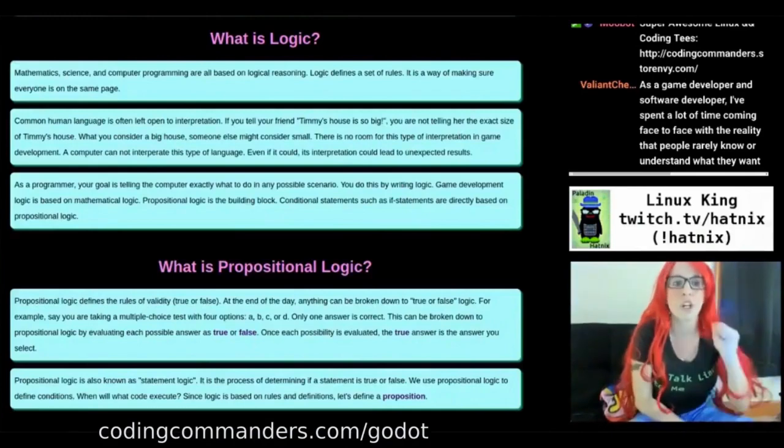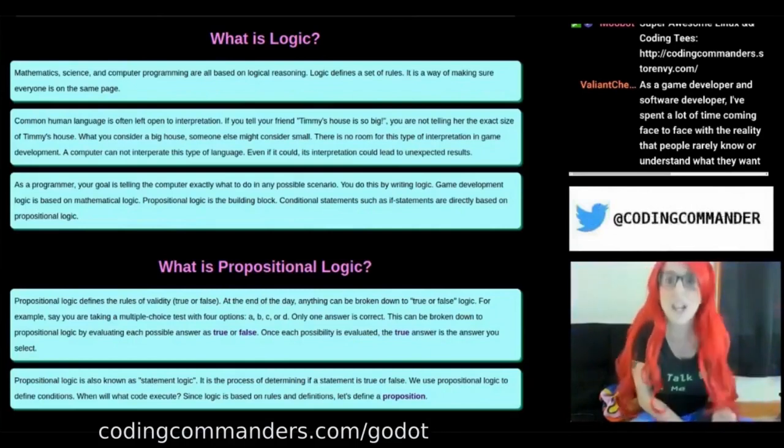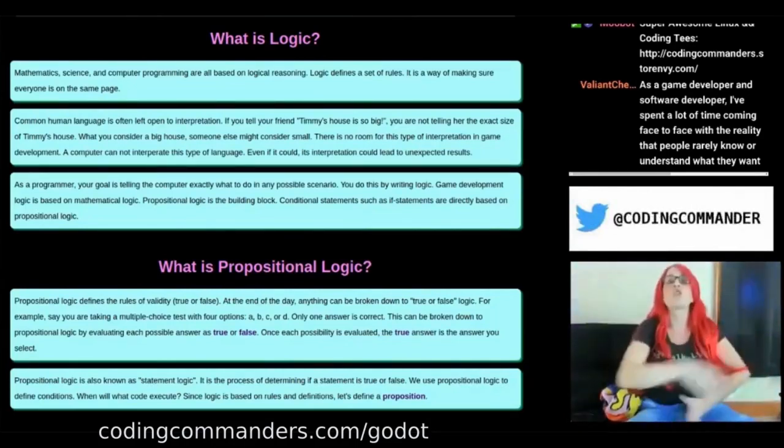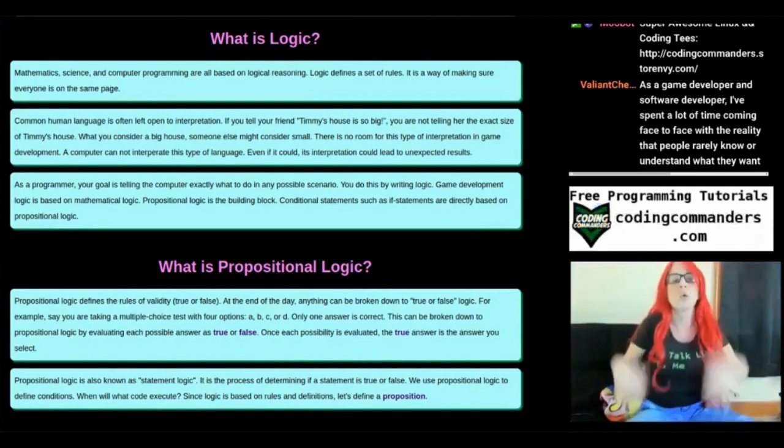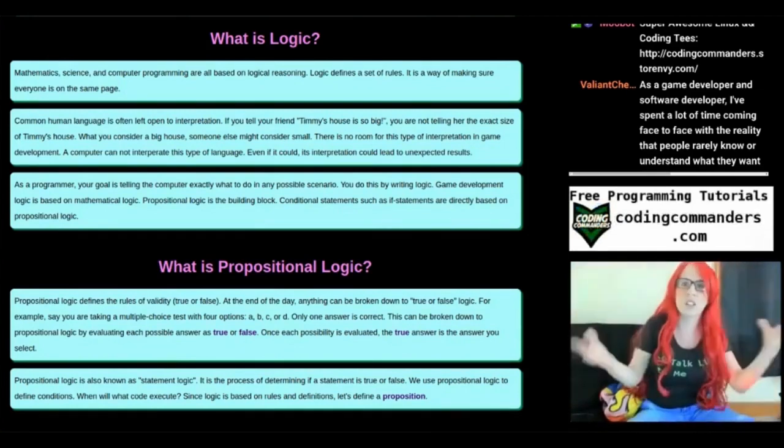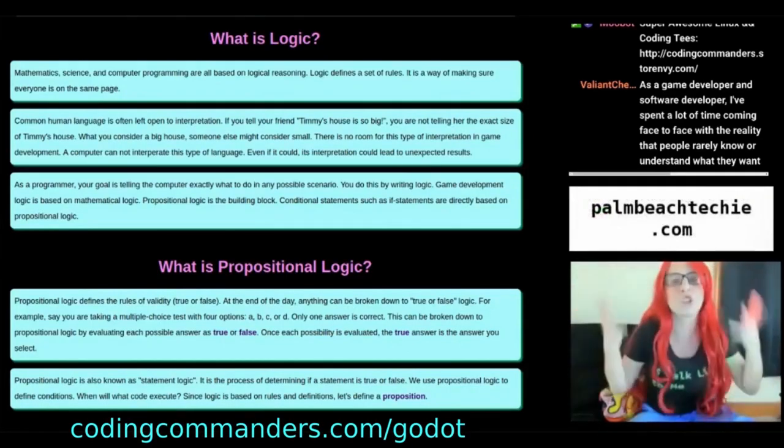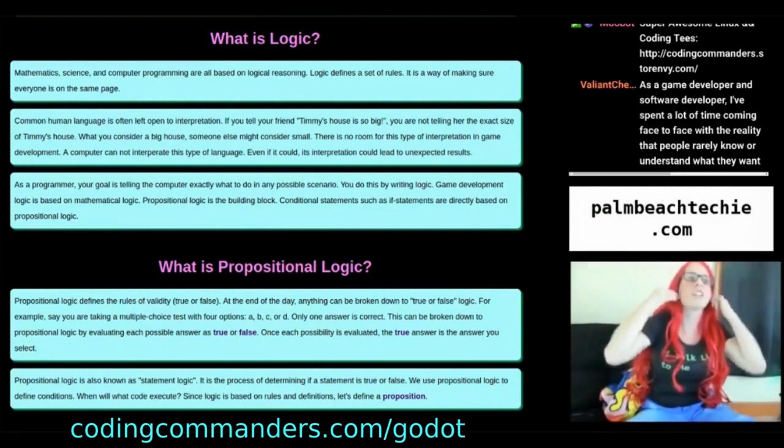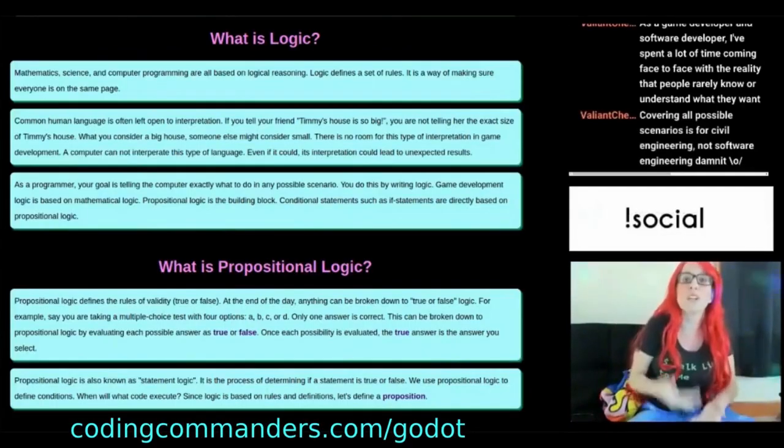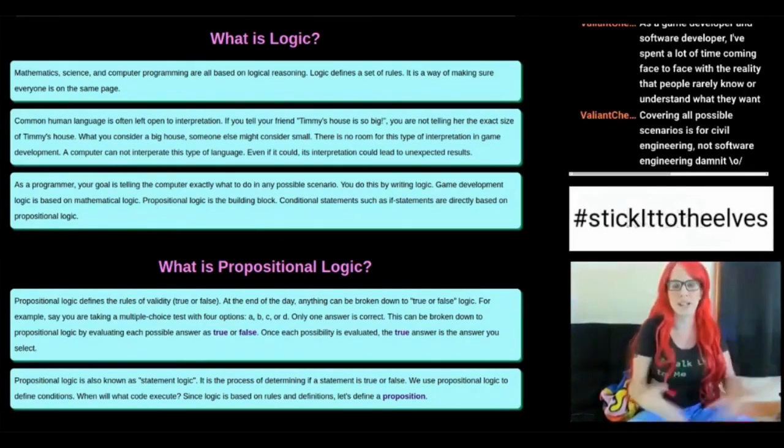As a programmer, your goal is telling the computer exactly what to do in every possible scenario. Now of course, there's no programmer that has always covered every single possible scenario in every single block of code. We're human. Stuff's going to happen. Things are going to go live. Something's going to break. There was a scenario you didn't think of. That doesn't make you a bad programmer. That makes you human. But your goal should be to cover every possible scenario. If your goal is to cover every probable scenario, your code's going to break when it goes live. If your goal is to cover every possible scenario, some things might break when they go live, but not as much. It's going to be easy to manage and fix.